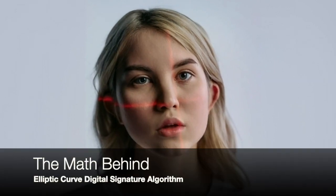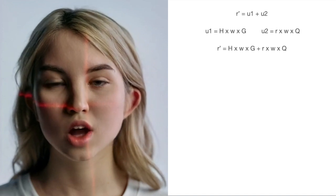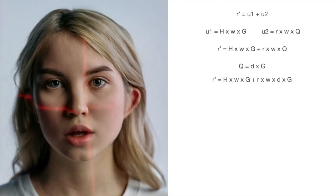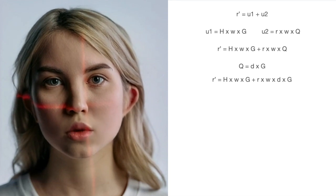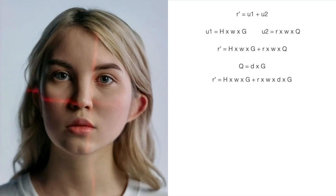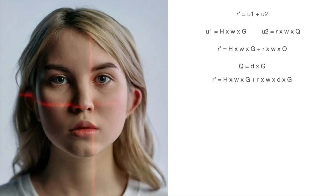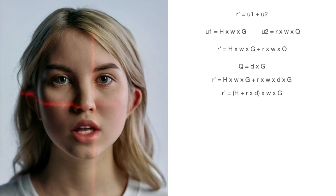Now let's focus on how this is really working. R prime calculation was the addition of U1 and U2, and it is equal to hash of message times W times base point G, plus R times W times public key Q. Public key was private key D times base point G. So R prime is equal to hash times W times base point G, plus R times W times private key D times base point G. Now, both addition terms have base point G and W multipliers, so R prime is equal to hash plus R times private key, times W times base point G.